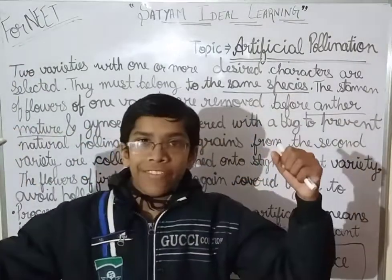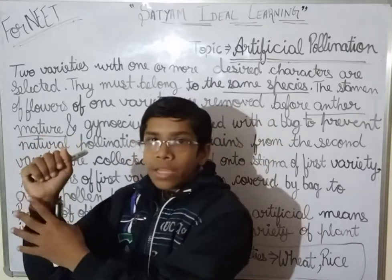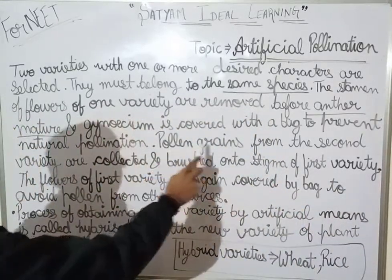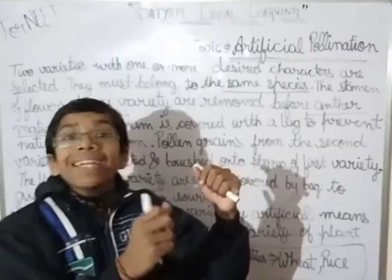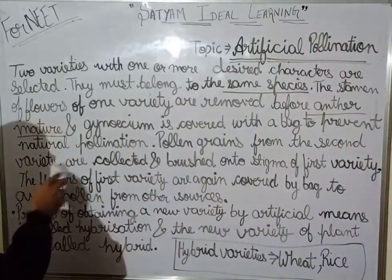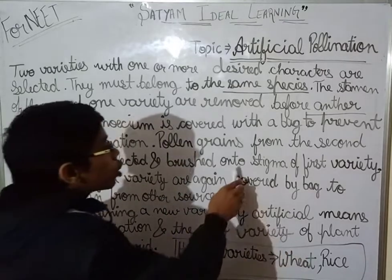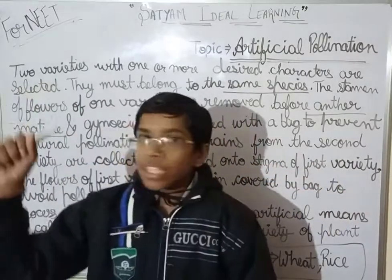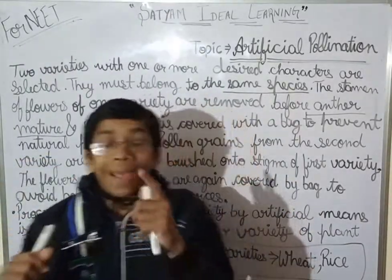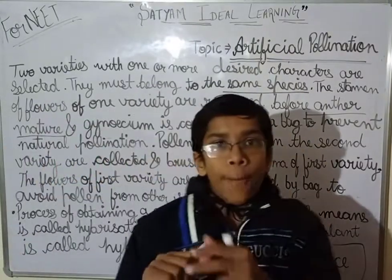From the first variety, I have removed the stamen before the anther matures and covered the gynoecium with a bag so that no pollination can occur. Now, pollen grains from the second variety are collected from the anther. I will take the pollen grains from the second variety and brush them onto the stigma of the first variety.